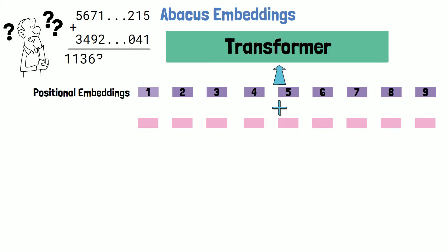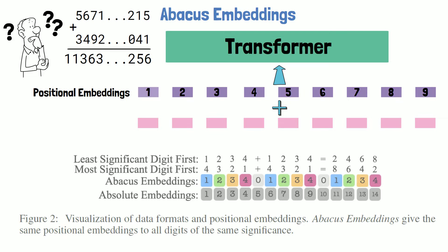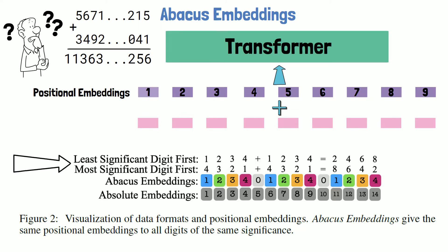So here come abacus embeddings, which we can learn about from the following figure from the paper. We see an addition of two numbers and the result — one time writing the numbers with the least significant digit first, and the other with the most significant digit first. In previous research it was shown that starting with the least significant digit can improve the results, and this paper adopts this as well.